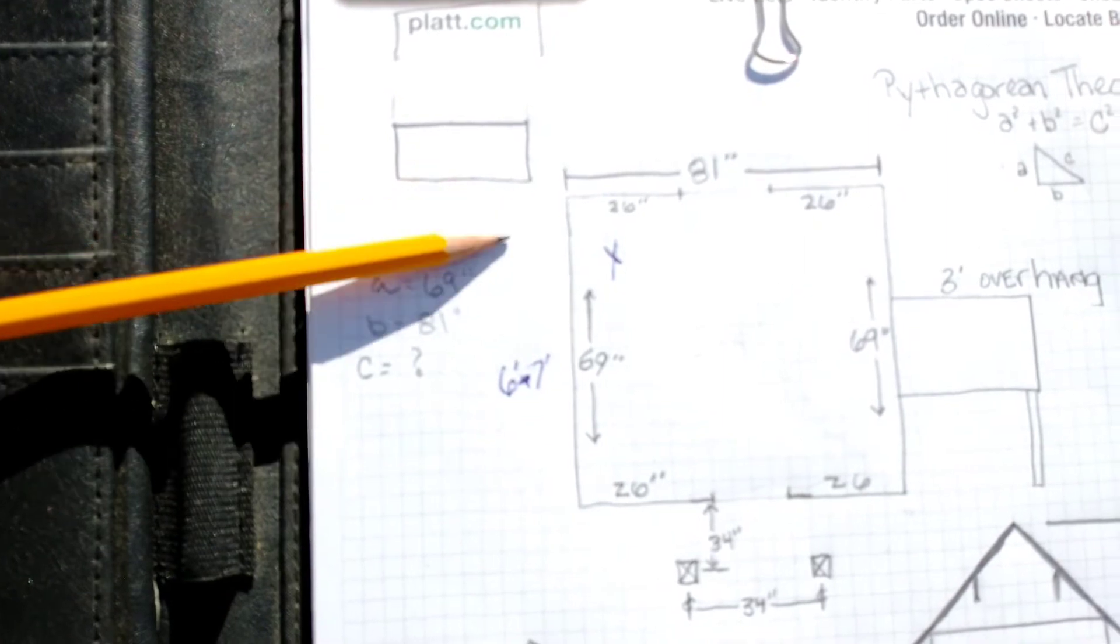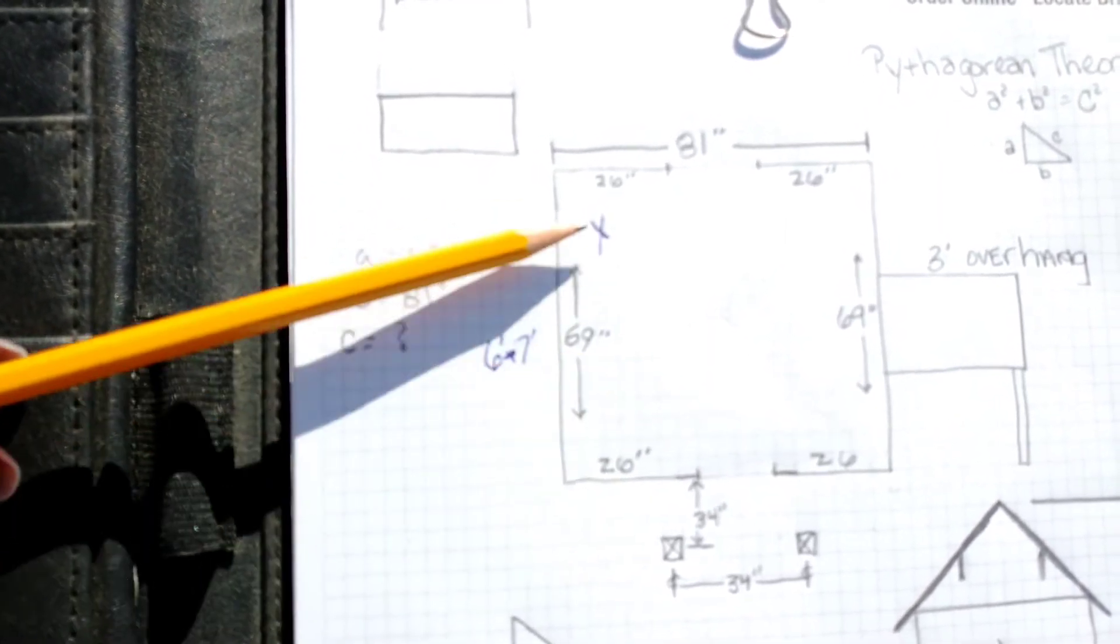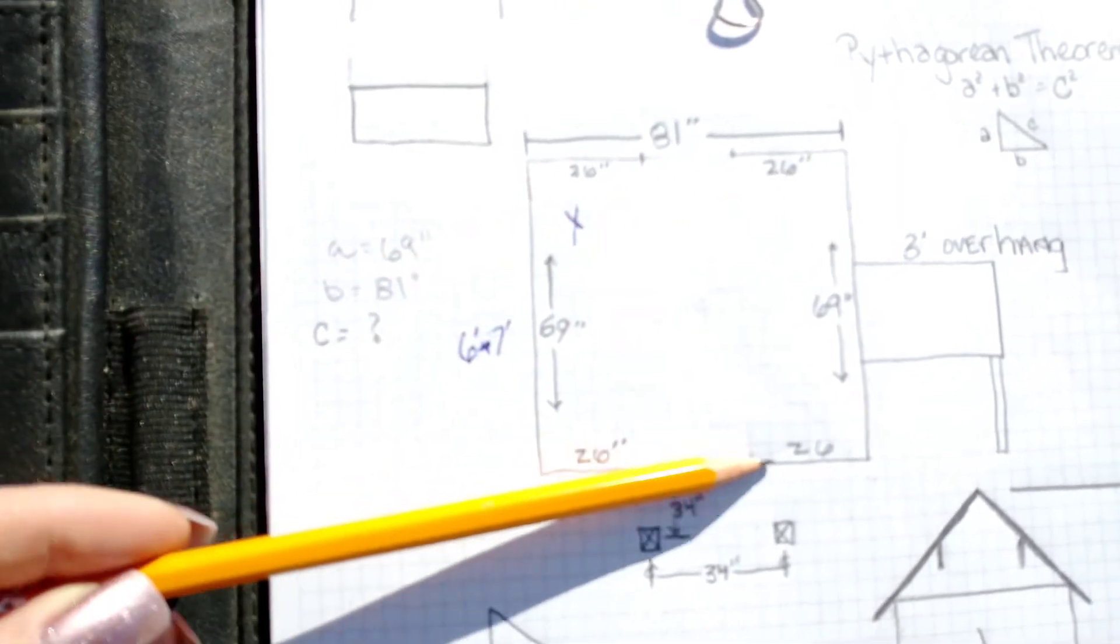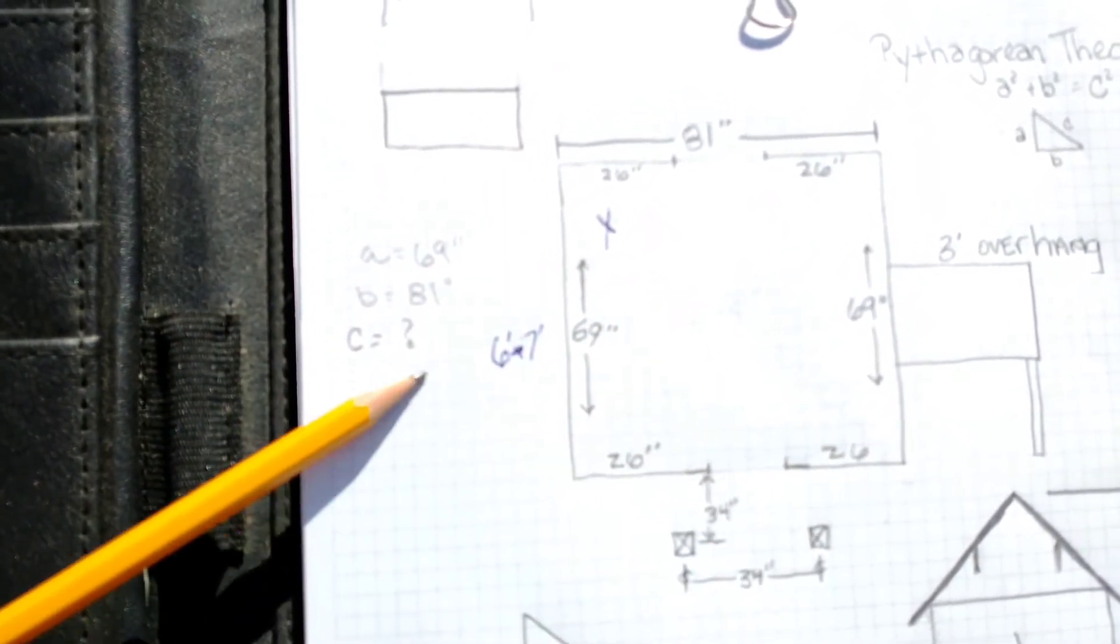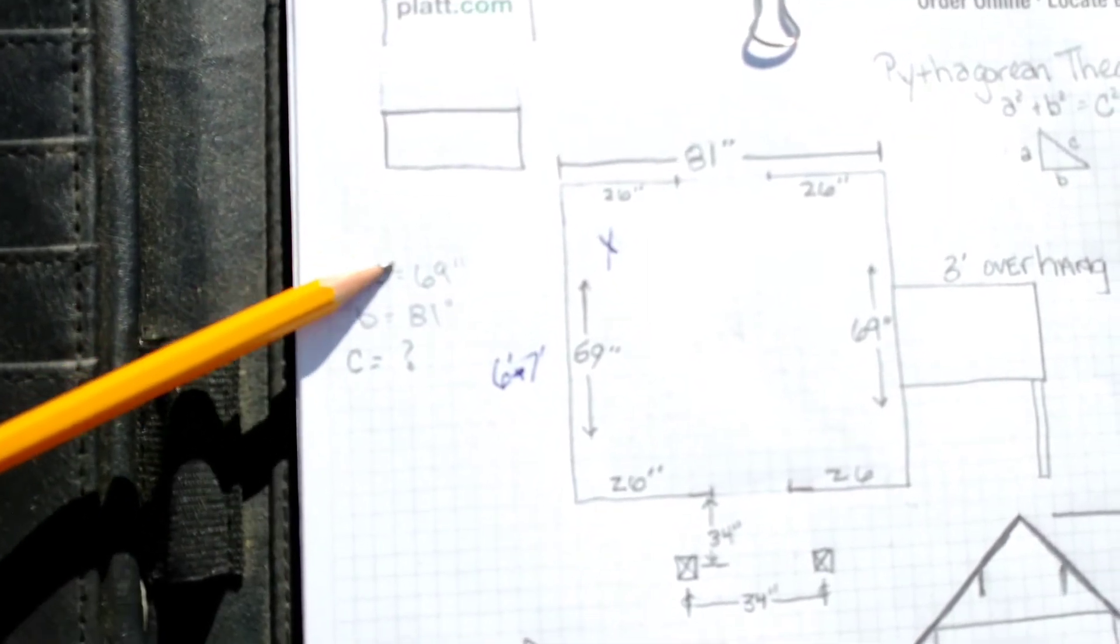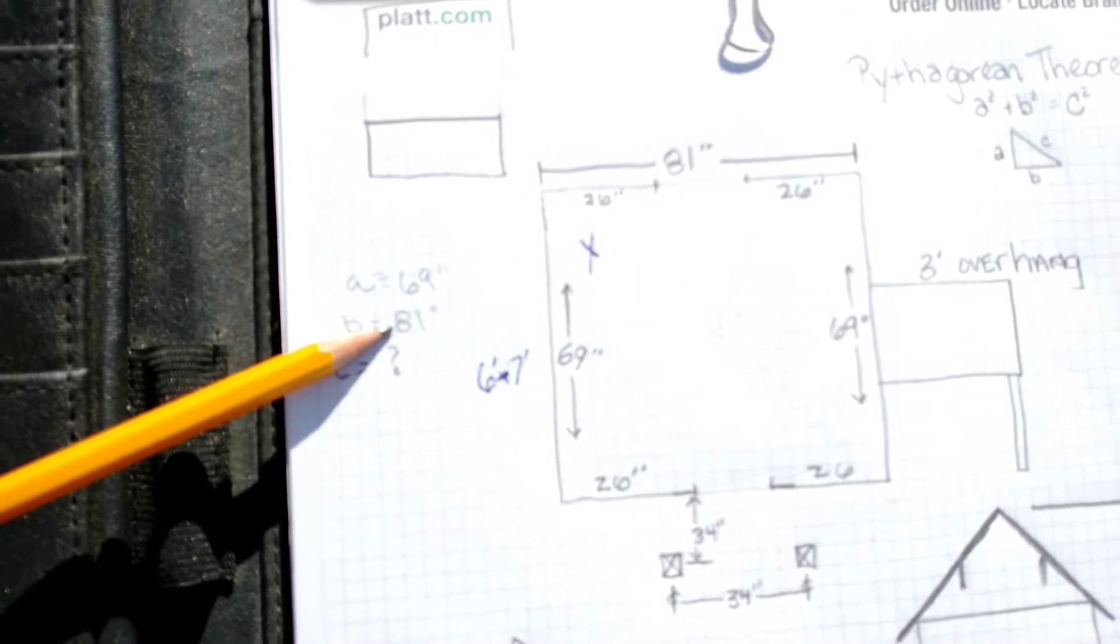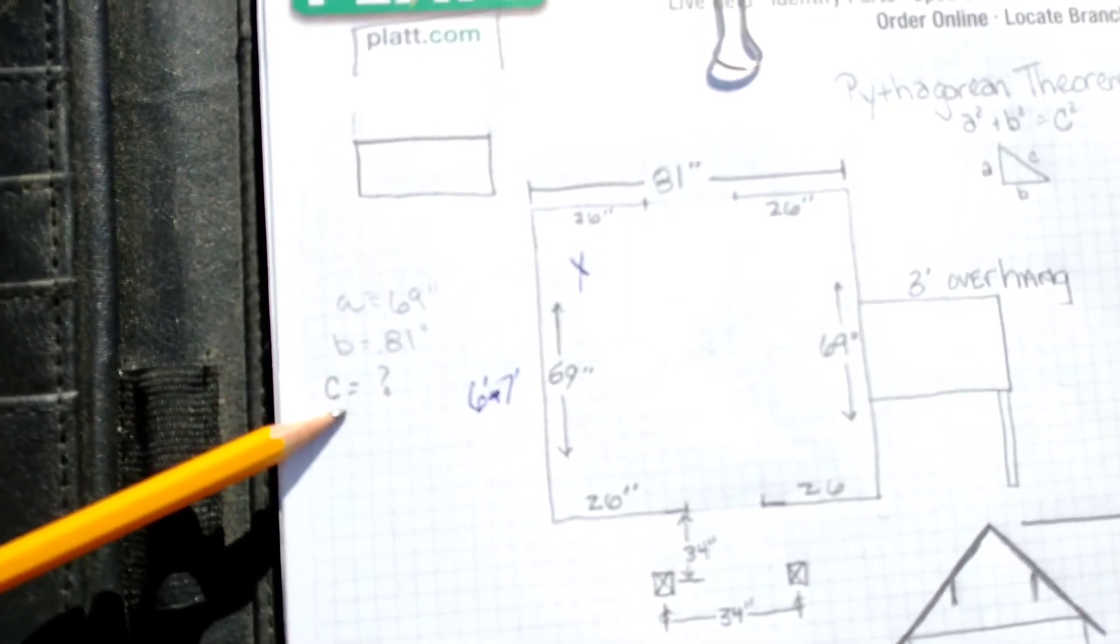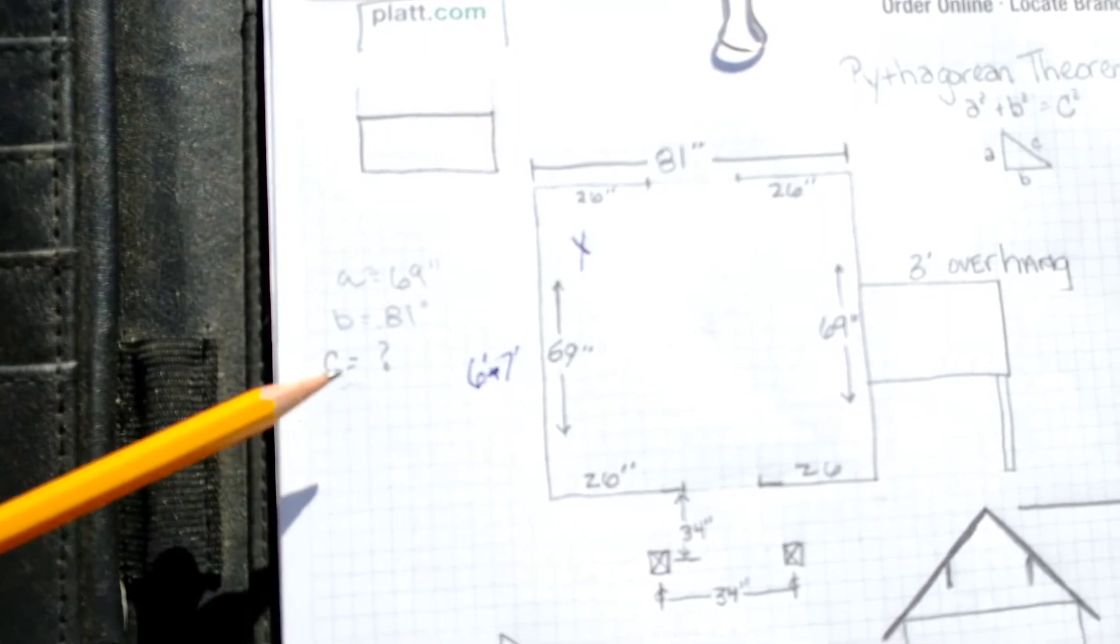Okay, so we know that A is 69 inches, Chris wrote that down, and B going across, B will be 81 inches. It's C, the hypotenuse that we do not know. So if we square A plus we add the square of B, it will equal whatever the square of C is. So let me show you how easy that is.